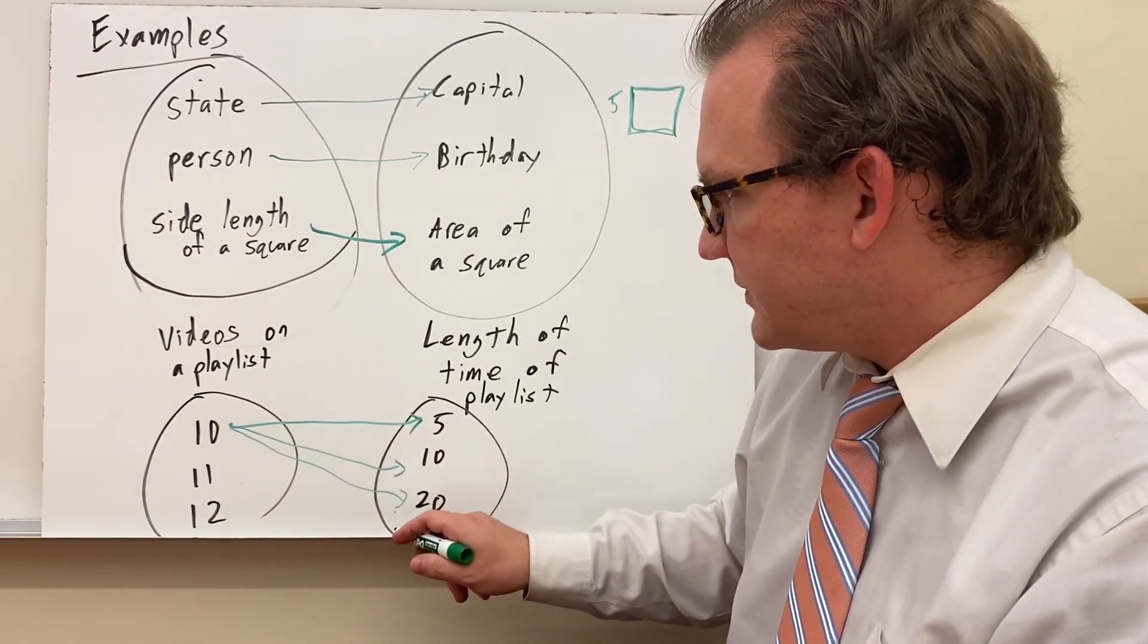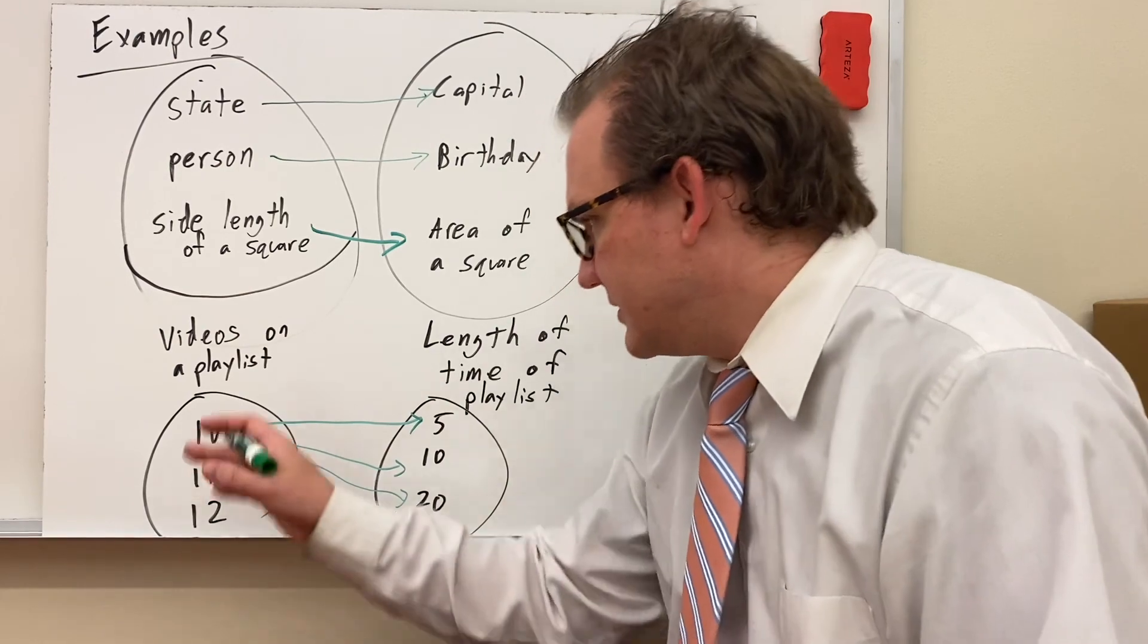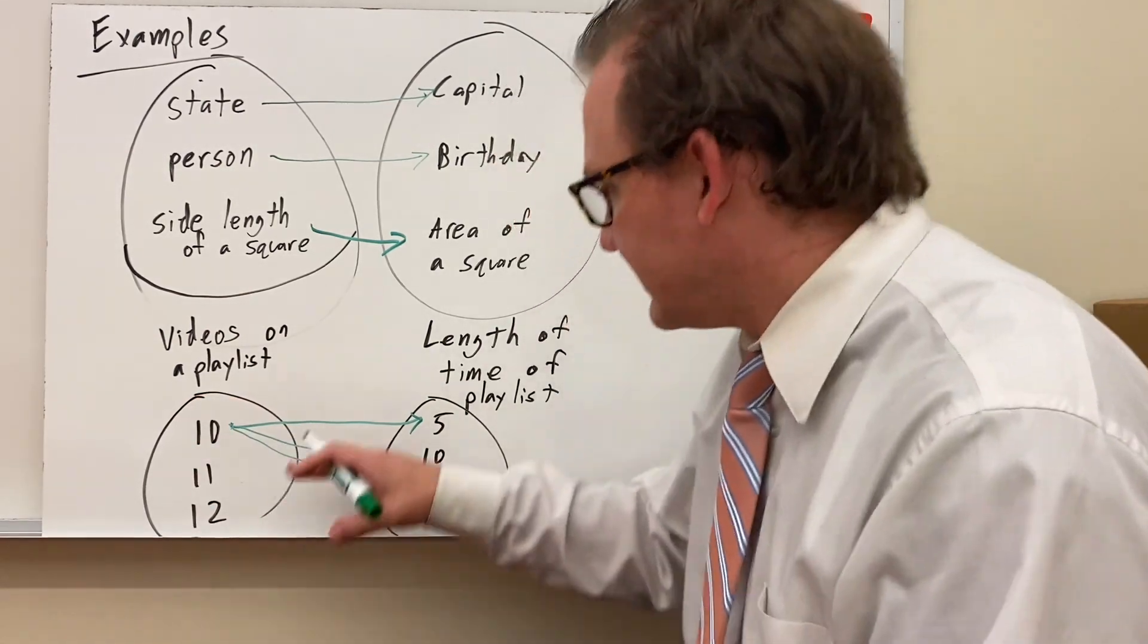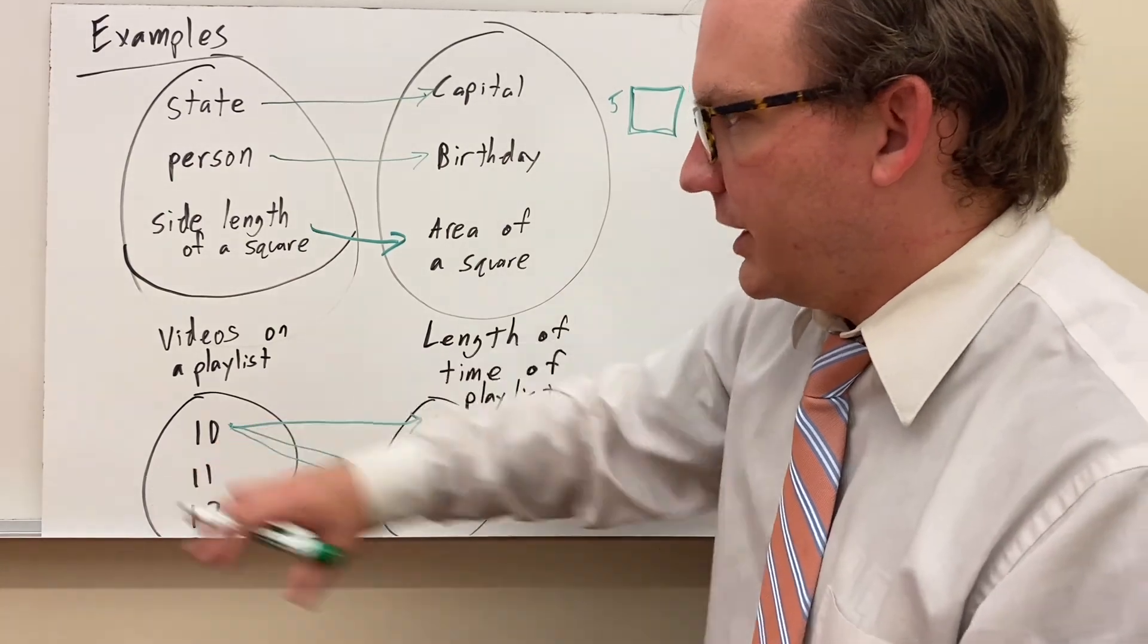And now I have this arrow diagram that has three possible outputs based on the input, which is the videos, the number of videos. That means it is not a function since I have multiple outputs to one input.